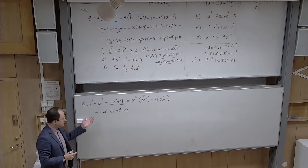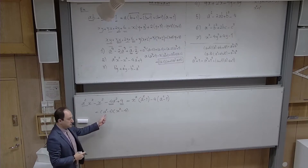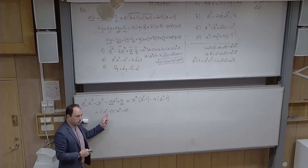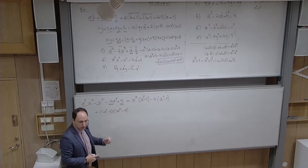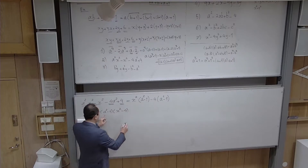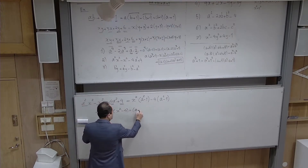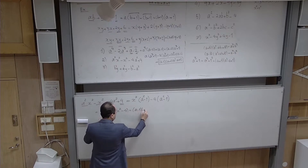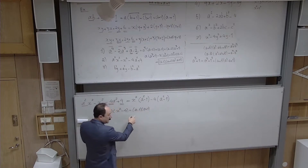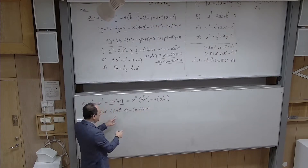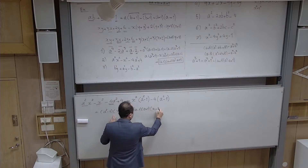Now I want to practice quadratic trinomials a little more. I told you how to factorize them systematically — it doesn't matter how large the numbers are; using the ABC formula you can always factorize them. But sometimes you can do it faster with guesswork. For example, to factorize x² + 5x + 6, you look for two numbers whose sum is 5 and product is 6 — those are 2 and 3.